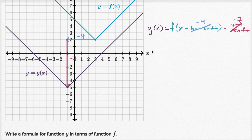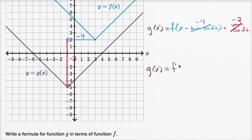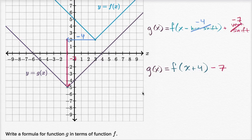We get g of x is equal to f of x minus negative four, or x plus four, and then we have plus negative seven, or you could just say minus seven.